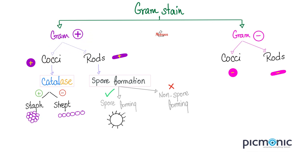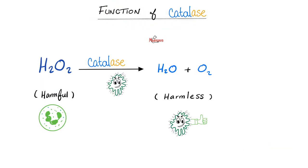Gram-positive bacteria are either cocci or rods. If you're a coccus, you can be classified based on the presence or absence of catalase: staphylococcus has catalase, streptococcus does not. Catalase is an enzyme — a catalyst. When bacteria invade your body, your body throws harmful chemicals like hydrogen peroxide at them. Some bacteria have catalase, which converts those harmful chemicals into harmless molecules. This is one mechanism of bacterial evasion from your immune system.